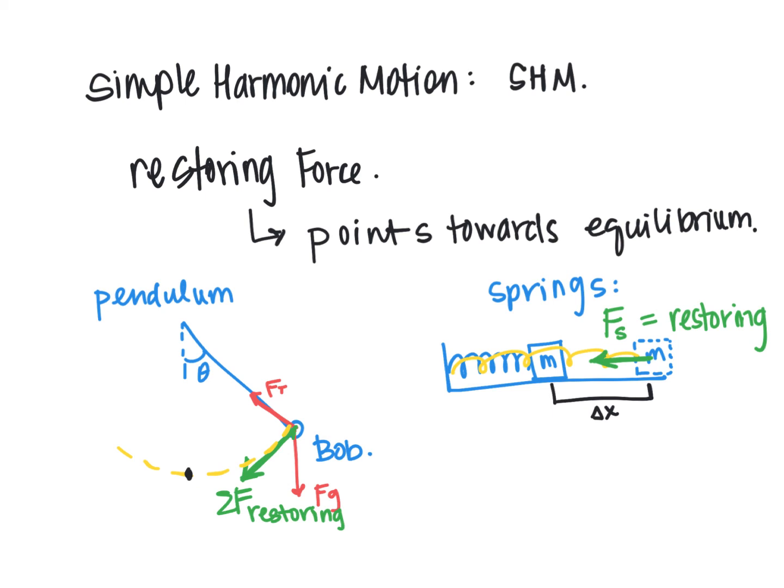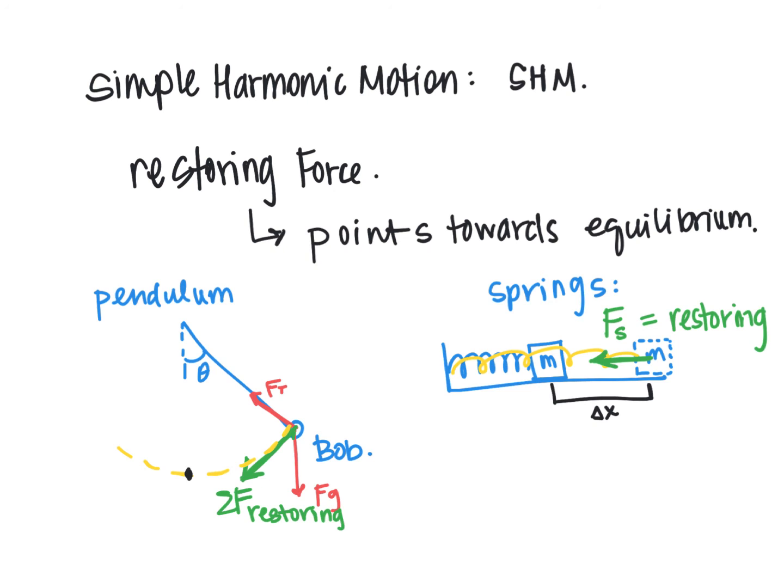If you imagine bouncing a basketball, you can bounce, bounce, bounce, and that's very periodic, but that's not simple harmonic. All simple harmonic motion is periodic, but not all periodic motion is simple harmonic. Just because it's periodic does not mean that it is, by definition, simple harmonic. Periodic motion just means repetitive, something that repeats over and over, while simple harmonic motion requires a restoring force.